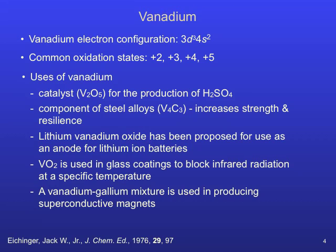The most common oxidation states of vanadium are +2 through +5. The most prevalent industrial use of vanadium is the production of sulfuric acid, one of the top industrial chemicals worldwide, and as a strengthening component of steel alloys. Vanadium also finds applications as a component in anodes of lithium-ion batteries, a coating on glass to block IR radiation, and in a mixture used to produce superconductive magnets.